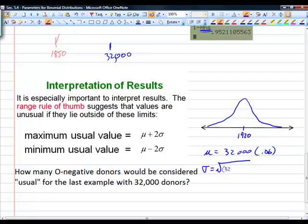That's 32,000 times 0.06 times 0.94. So the maximum usual value would be the mean plus 2 times 42, or 84. So 1920 plus 84 is 2004. That would be the maximum usual value. That means if I got 2004 O negative donors out of 32,000 donors total, it'd be a little high, but it's still within what we consider to be usual. But if I got 2005 donors that had O negative blood, that would be unusual.